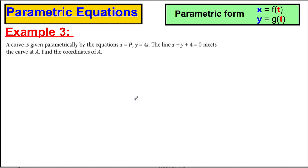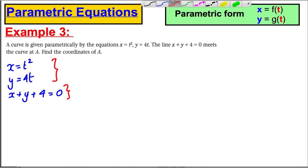Example 3. The curve is given parametrically as follows: x equals t squared, and y equals 4t, and the line x plus y plus 4 equals 0 meets the curve at A. Find the coordinates of A. Well, what we've got here is we've got some simultaneous equations. These two are the parametric form of a curve, and this one is the Cartesian form of a straight line. Now, if we were to substitute it for the solutions of these, it's when the x and the y of the parametric satisfy this equation.